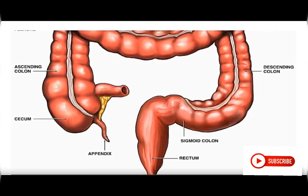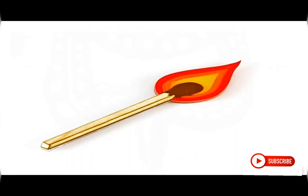Usually the size of the appendix is about five to ten centimeters, and the size of its lumen is about one to three millimeters, which is approximately the size of a matchstick.